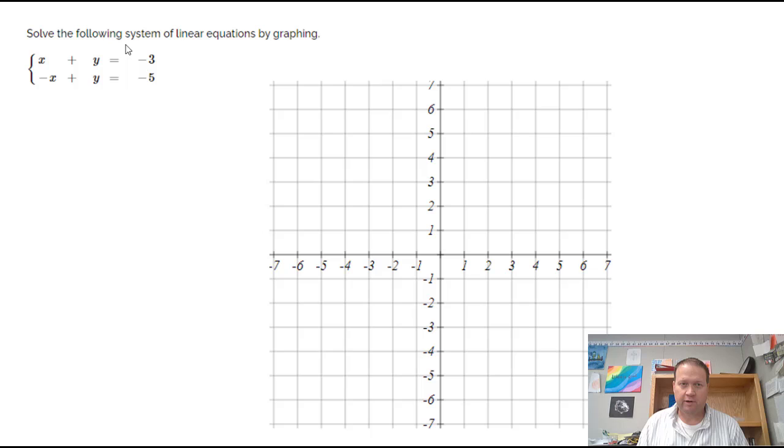We're looking at a system of linear equations today, and all a system of linear equations means is that we have more than one equation and we're going to try and find an ordered pair that satisfies both of these equations at the same time.